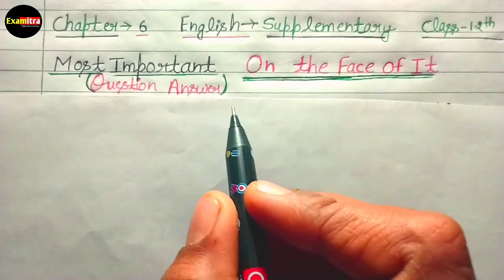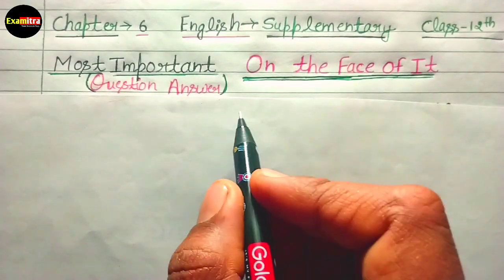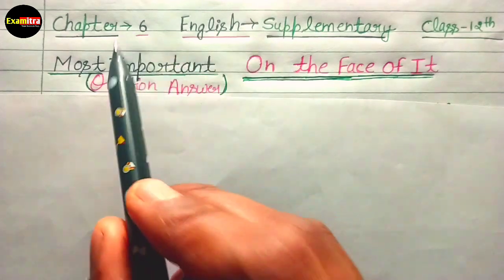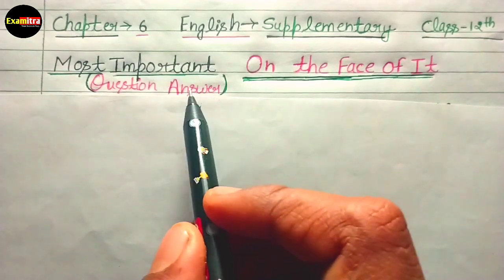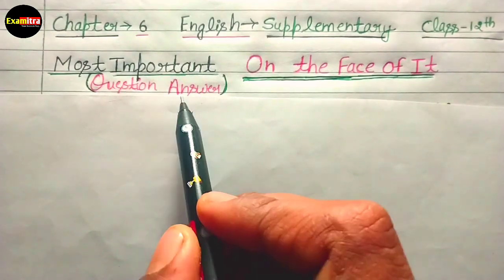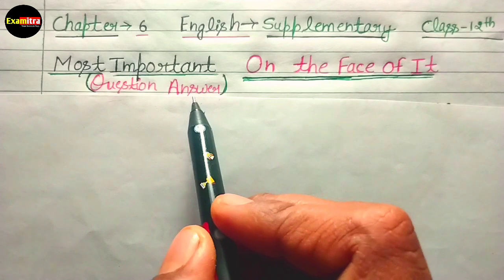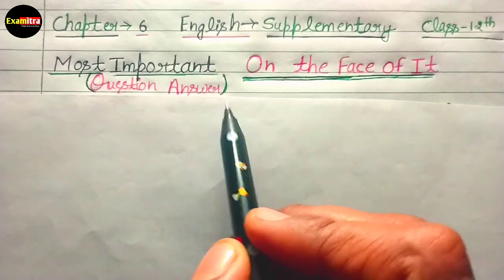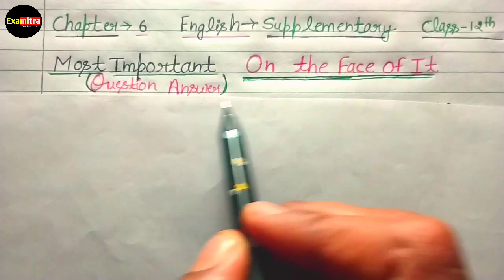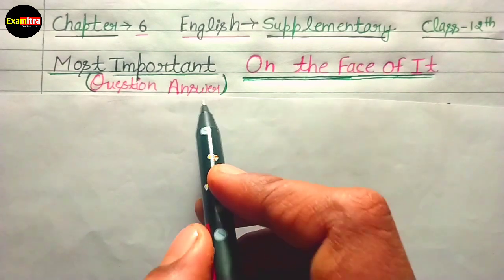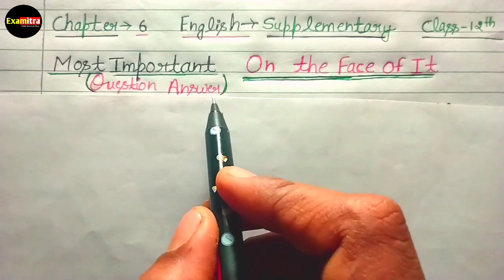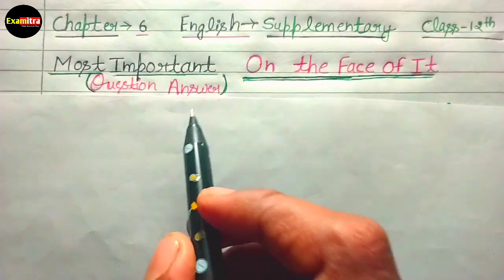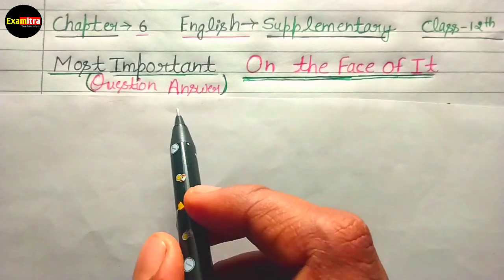Hello friends and welcome back to my YouTube channel Exam Mitra. In this video we are in Class 12 English supplementary chapter 6, which is the last chapter. We are watching the most important questions in this chapter, and I have covered all the important questions. You will find the link in the description or check out from the playlist. I have also completed the prose and poetry.